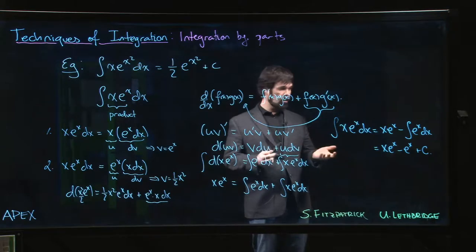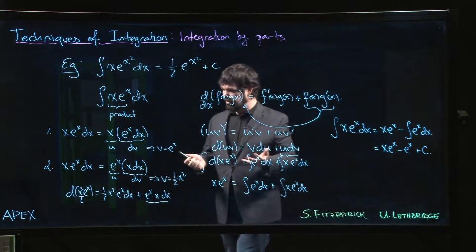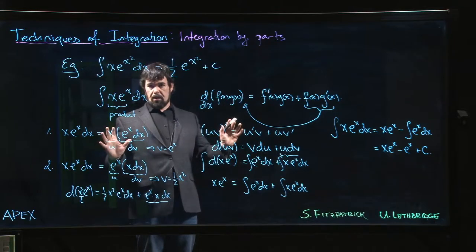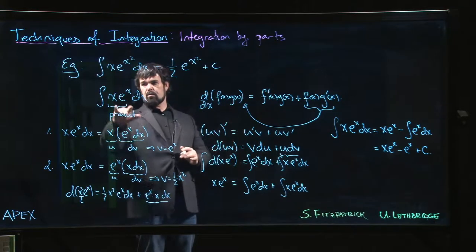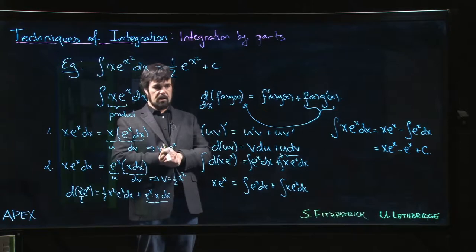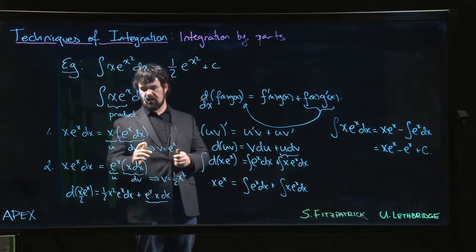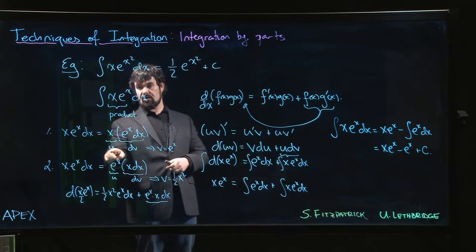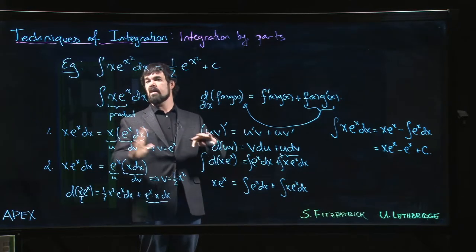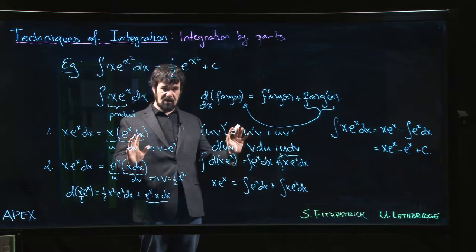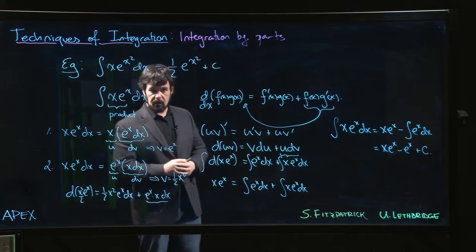So this is the routine for integration by parts. We'll see more complicated examples, but this is the general idea: integration by parts comes into play when you recognize you've got a product and you can simplify things by making the correct identifications of u and dv. The best way to get the hang of this is to do a whole bunch of examples, and that's what we'll do in the following videos.